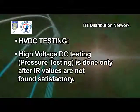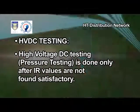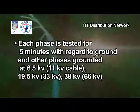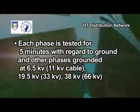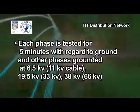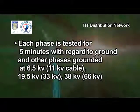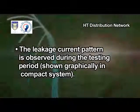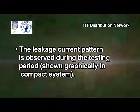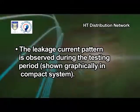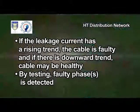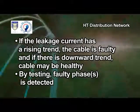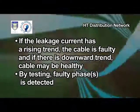HVDC testing — high voltage DC pressure testing — is done only after IR values are not found satisfactory. Each phase is tested for 5 minutes with respect to ground, with other phases grounded, at 6.5 kV for 11 kV cable, 19.5 kV for 33 kV, and 38 kV for 66 kV. The leakage current pattern is observed during the testing period and shown graphically in the compact system. If the leakage current has a rising trend, the cable is faulty; if there is a downward trend, the cable may be healthy. By testing, the faulty phase or phases are detected.